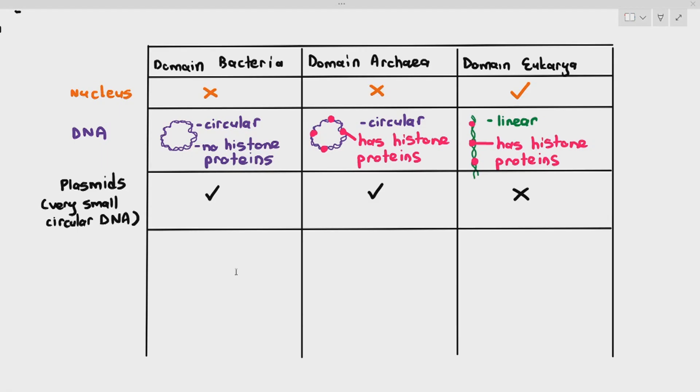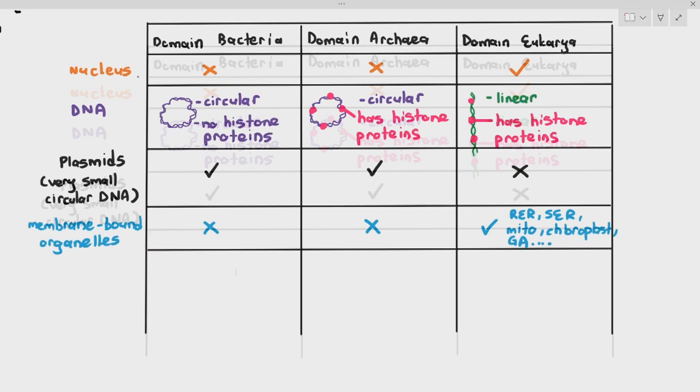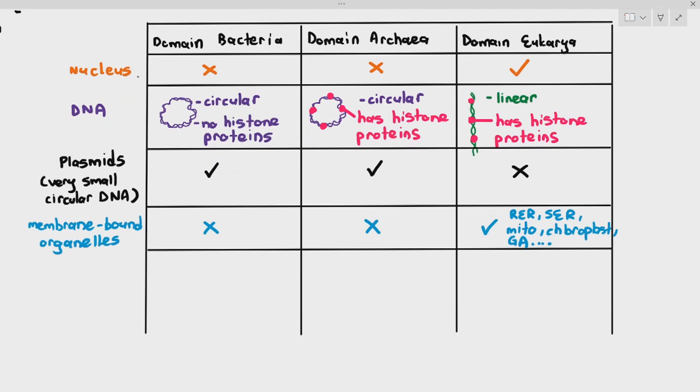Membrane-bound organelles such as rough ER, smooth ER, mitochondria, chloroplasts, vacuole. Bacteria and archaea do not have them because they're extremely small. But eukarya, because their size is much bigger, they can accommodate these membrane-bound organelles like rough endoplasmic reticulum, smooth ones, mitochondria, chloroplasts, Golgi apparatus, large permanent vacuole, vesicles, those kind of things.